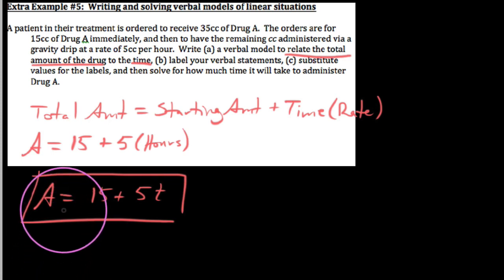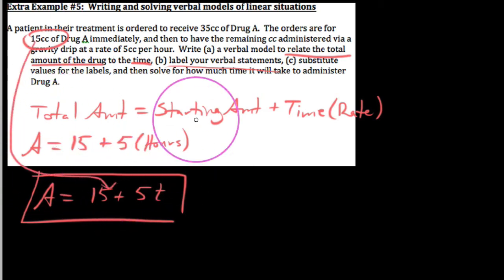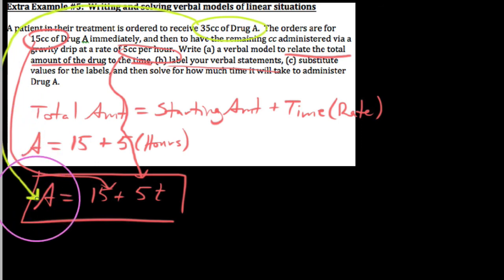That being said, we've already been told a few things here. We've already labeled our verbal statements. We need to substitute in our values for our labels now. We got the initial 15 right off the bat here. We say 5 cc's per hour—that is our rate. We say their total amount of drug A they're supposed to get is this 35 cc's, and so that can actually be substituted into our verbal model right here.